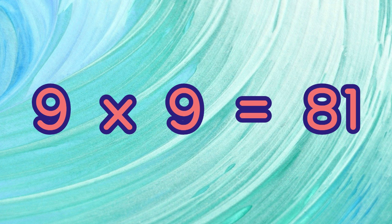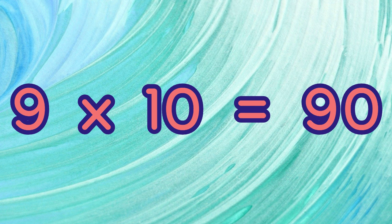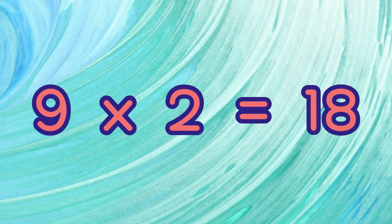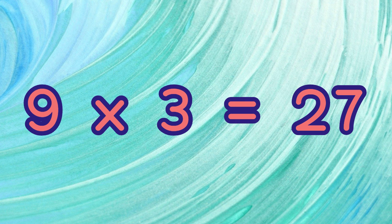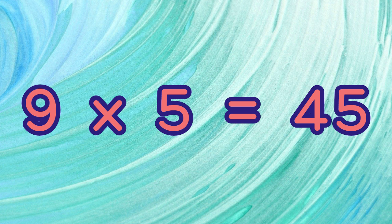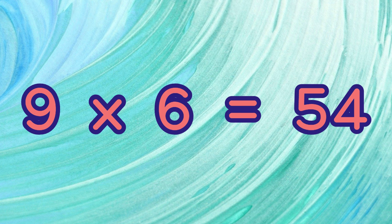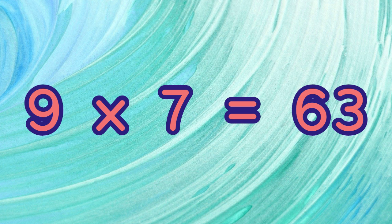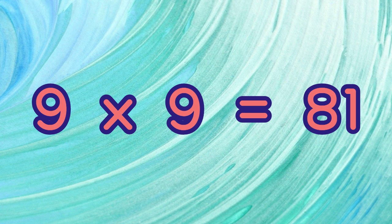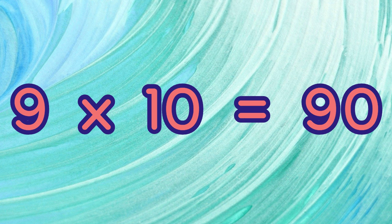9 x 8 equals 72. 9 x 9 equals 81. 9 times 10 equals 90. 9 times 1 equals 9. 9 times 2 equals 18. 9 times 3 equals 27. 9 times 4 equals 36. 9 times 5 equals 45. 9 times 6 equals 54. 9 times 7 equals 63. 9 times 8 equals 72. 9 times 9 equals 81. 9 times 10 equals 90.